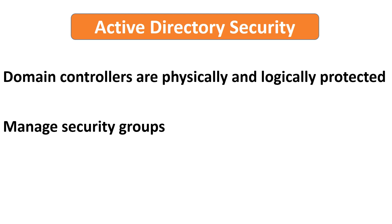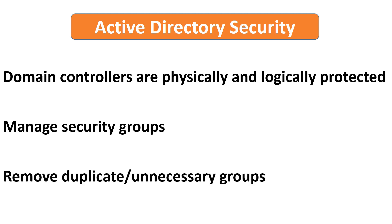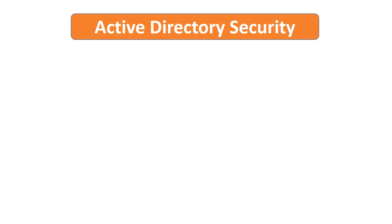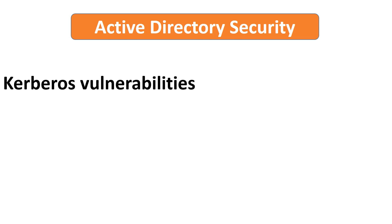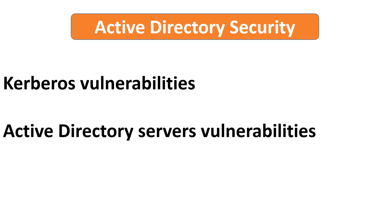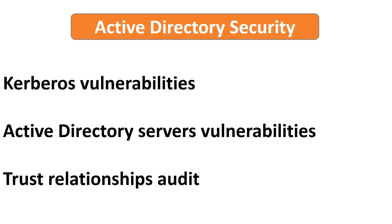Ensure continuous monitoring of security and privileged groups to detect and respond to such changes immediately. Reduce the number of domains in your directory and remove duplicate or unnecessary groups. Ensure that Kerberos vulnerabilities are regularly assessed in the Active Directory and resolved. Check and verify that Active Directory servers are hardened against the latest CVEs and other vulnerabilities, and all issues are mitigated. Ensure that trust relationships across the forests are regularly audited and reviewed.